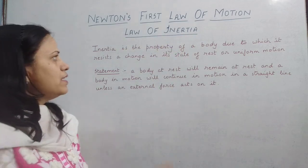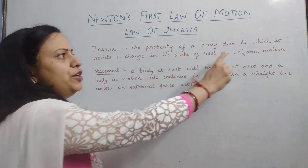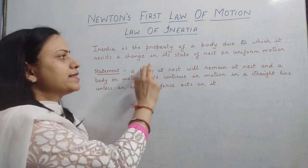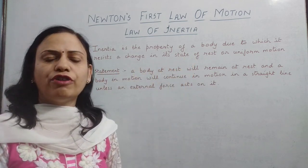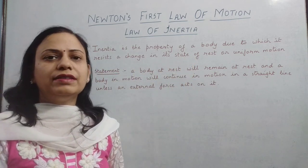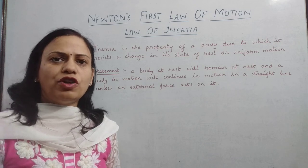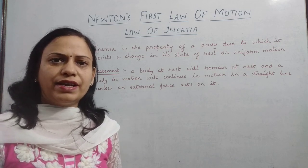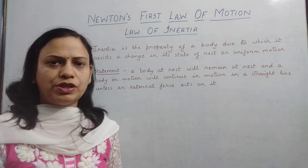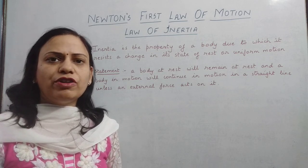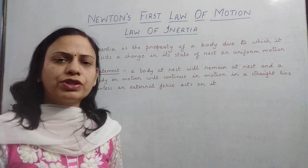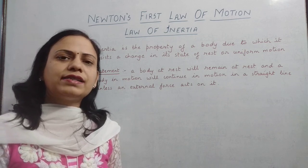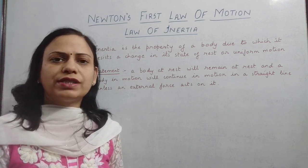Inertia is that property of a body due to which it resists a change in its state of rest or uniform motion. This means that if an object is at rest, it will try to remain at rest — there will be no change in its position. Or if an object is in motion, it will remain in motion and will not come to rest unless an external force is acting on it.